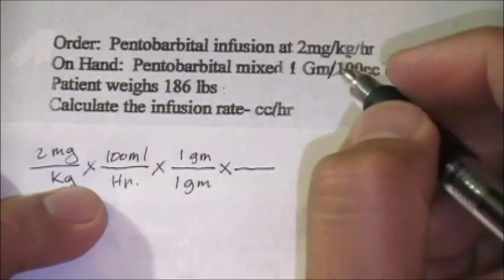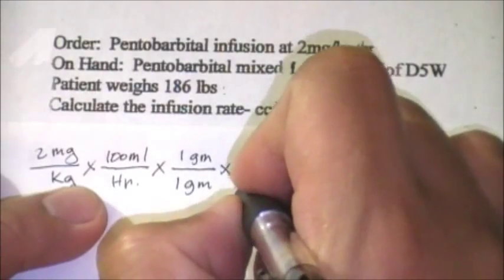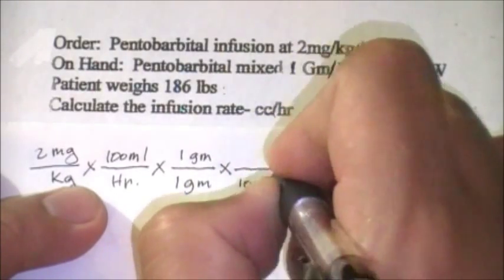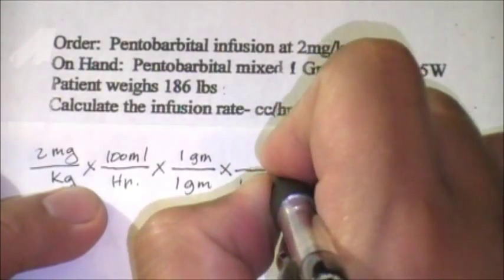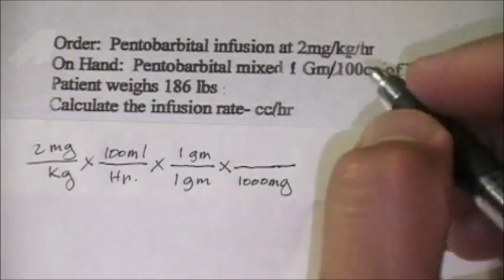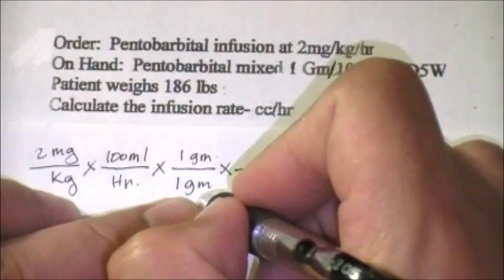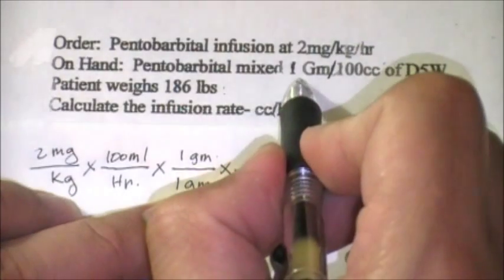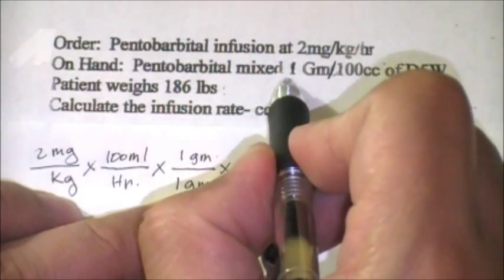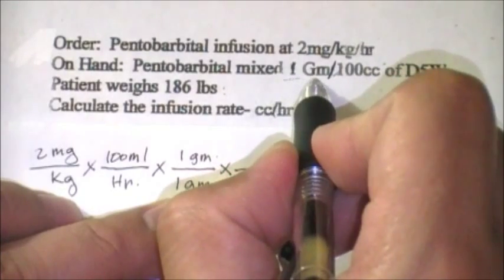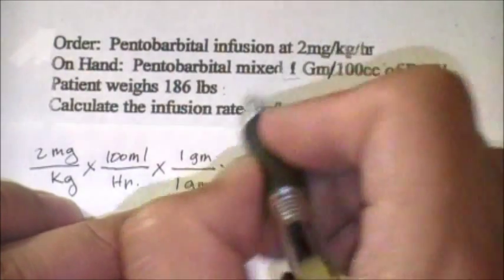1 gram is equivalent to how many milligrams? 1 gram is equivalent to 1000 mg, so we have to put 1000 mg here. Don't confuse these two grams—I place 1 gram here because that is the gram given, our stock on hand.